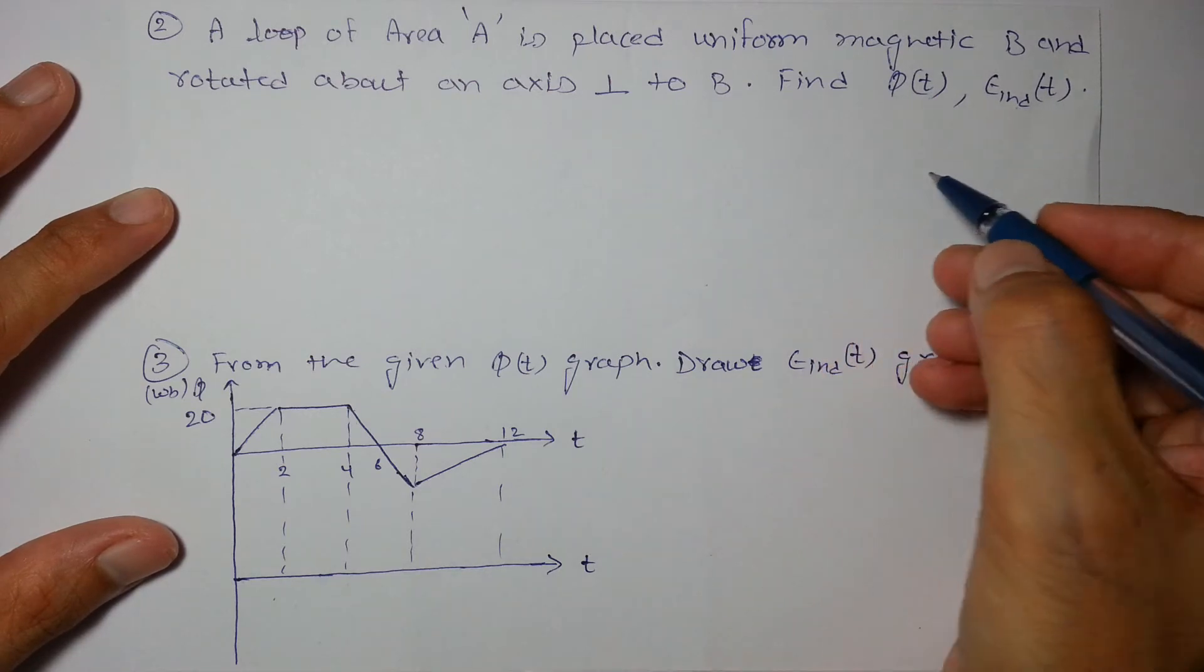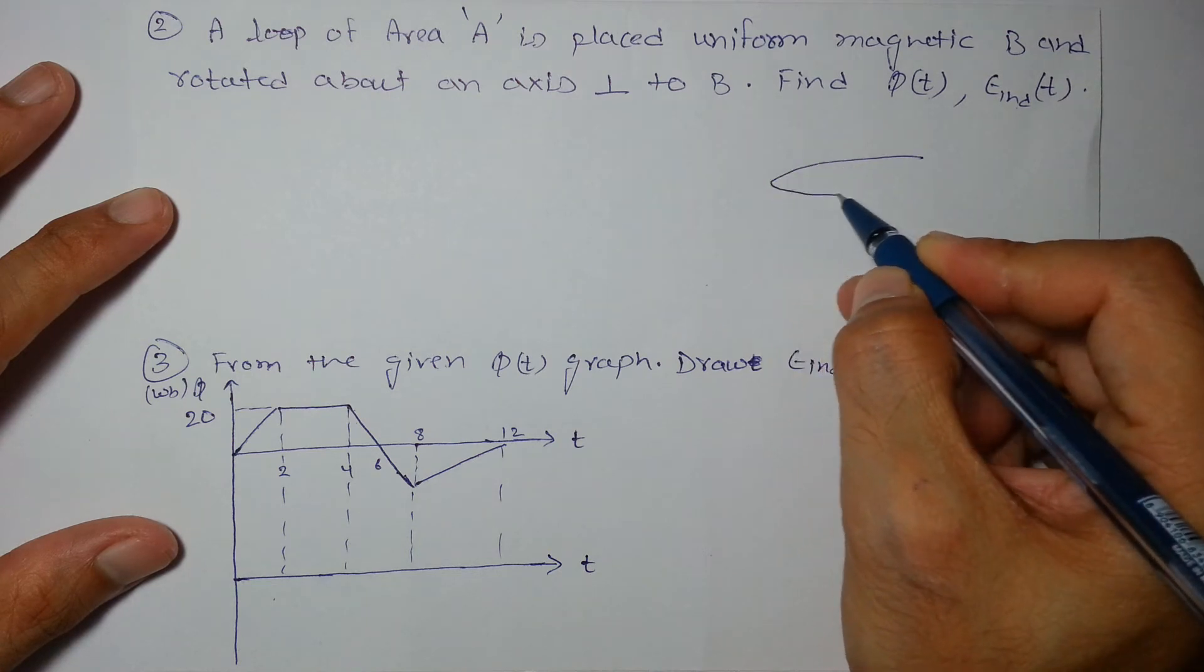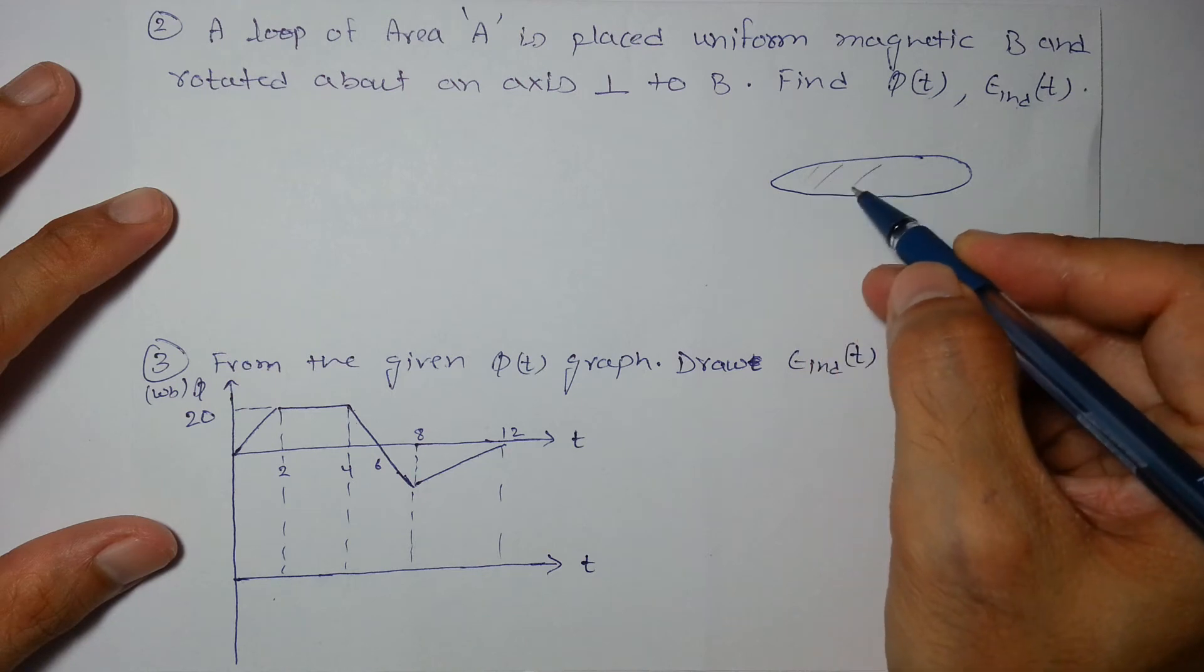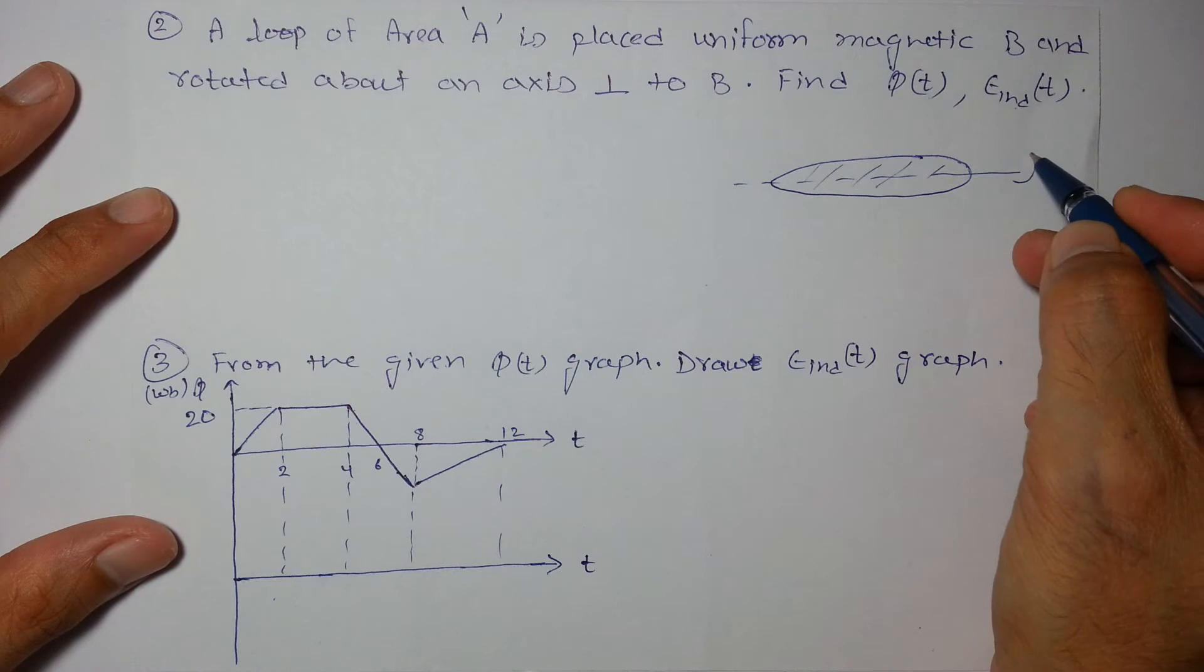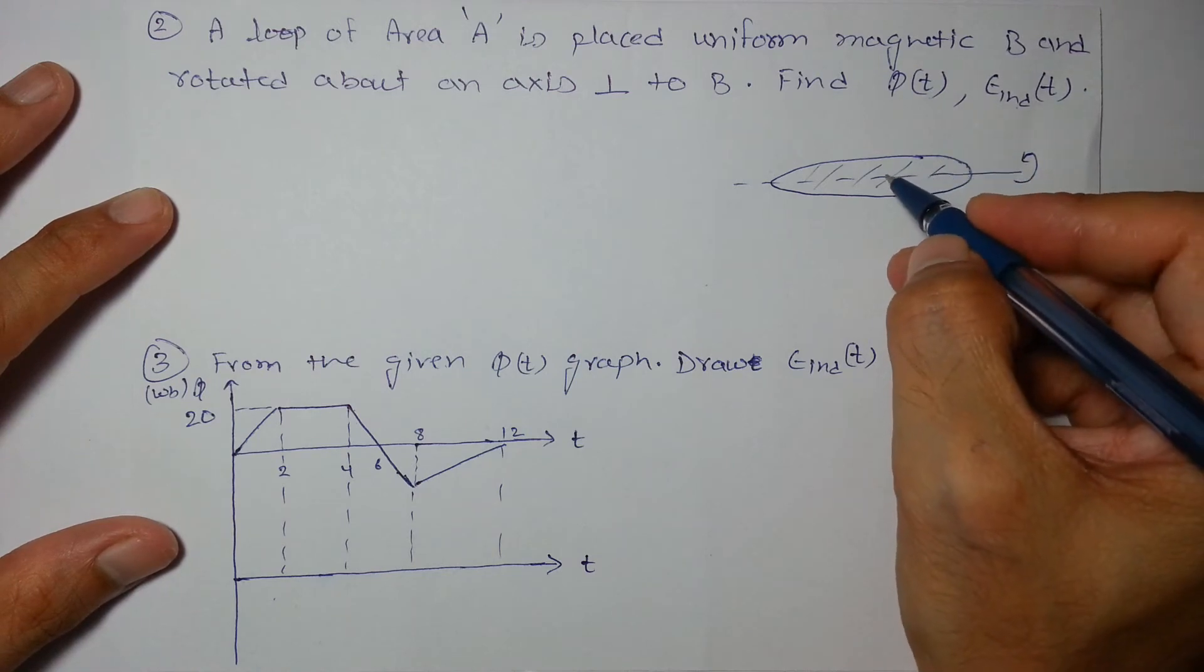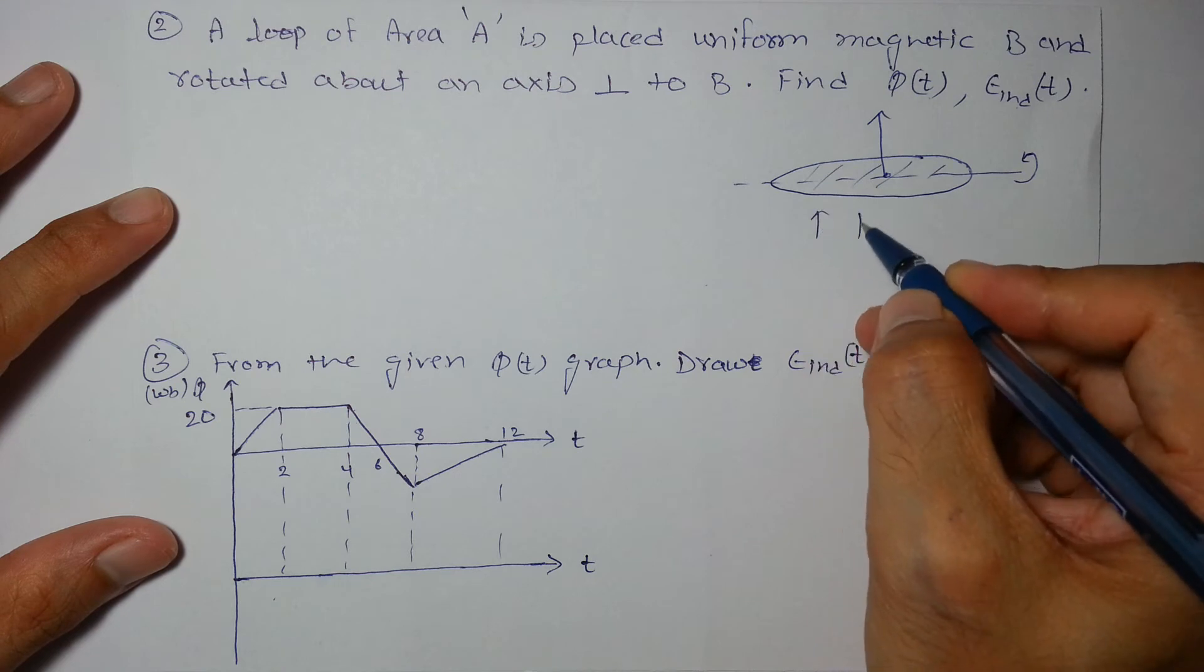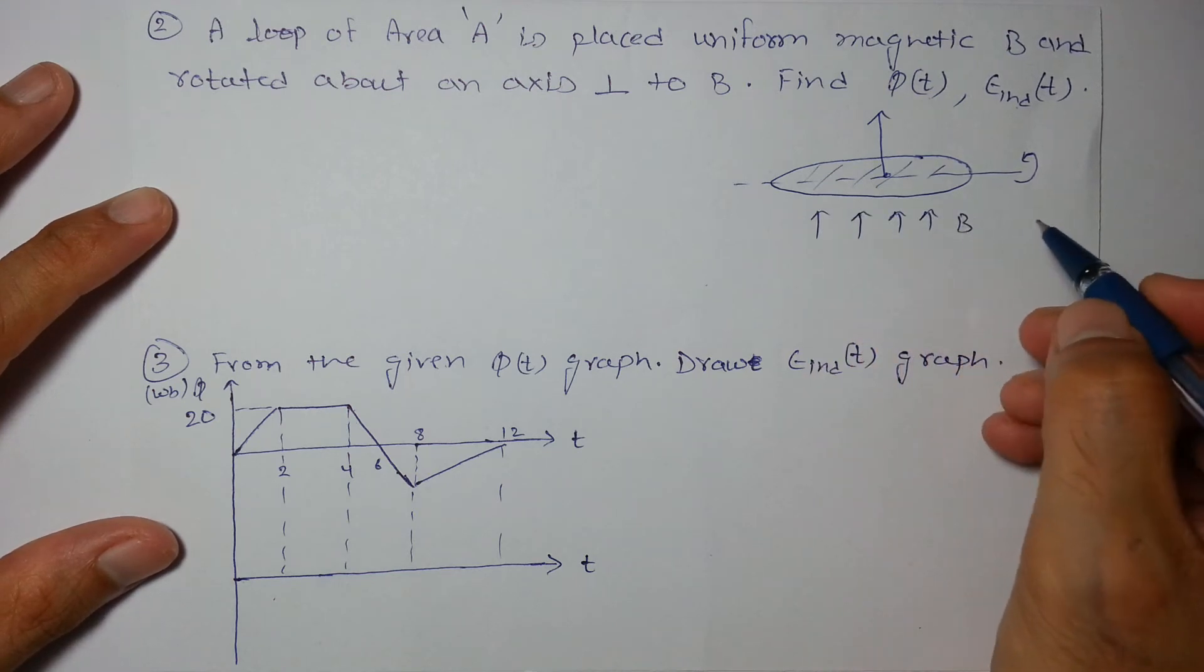Let us take an example. Let's say assume it to be a disk. The loop can be of any shape but we are assuming it to be a disk, and this is the axis about which we are rotating it. So the area vector is here and this is the magnetic field. The initial angle I am assuming to be 0.